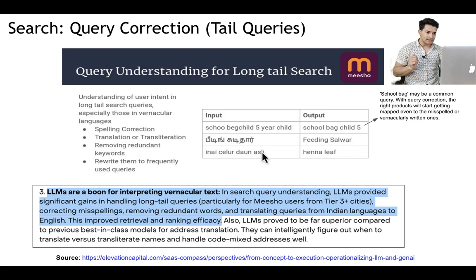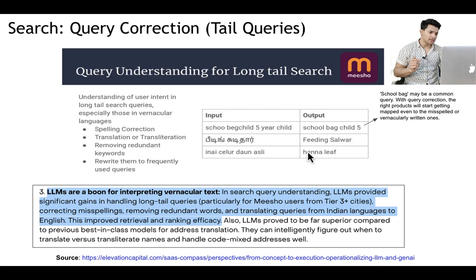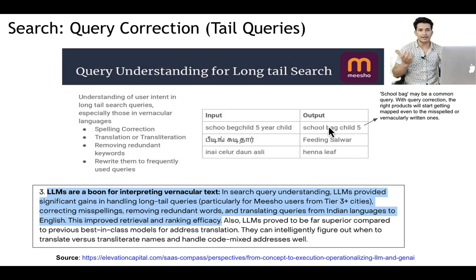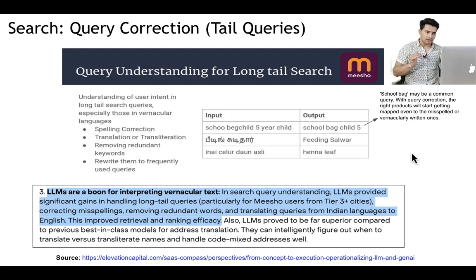You can see examples where the input queries are misspelled, or sometimes vernacular, sometimes romanized — that is, in a vernacular language but written with English alphabets. The LLM provides clean, corrected queries. What can happen because of this correction is that a tail query, after correction, can become one of the head or torso queries which is already popular, and we already know which products need to be mapped to that query. So Misho's query correction for tail queries resulted in significant gain.